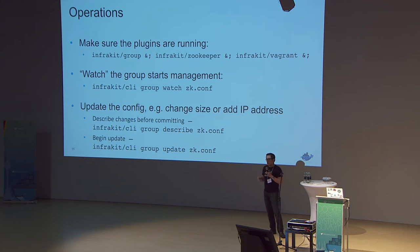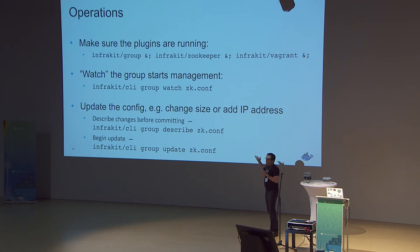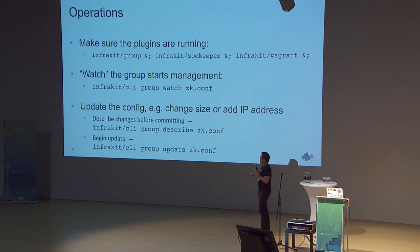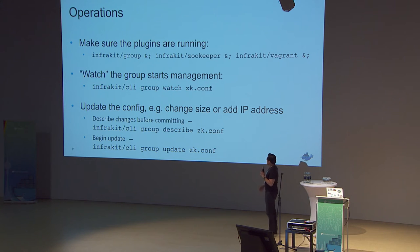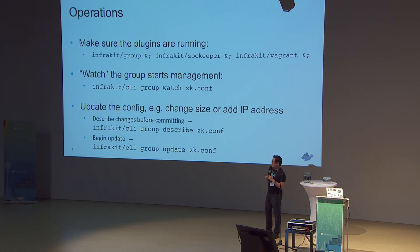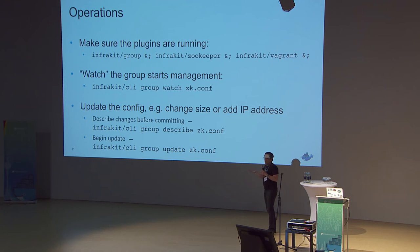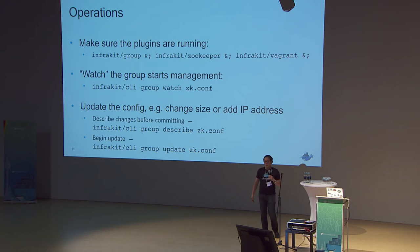Given that configuration specifying a Zookeeper cluster of three nodes with particular IP addresses, you just tell InfraKit to start watching it. InfraKit figures out what needs to be done — if there aren't any nodes running as a Zookeeper ensemble, it simply creates them. Then it starts the monitoring and reconciliation loop continuously to maintain the specified state. If you decide to change something — maybe change the instance type, some configuration, or upgrade the Zookeeper software — you can tell InfraKit to describe-update, which gives you a plan of what it's about to do. Once you're okay with that, simply run update and things start rolling.